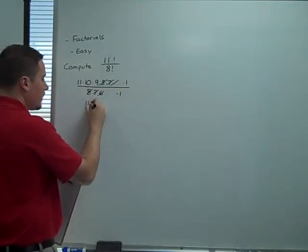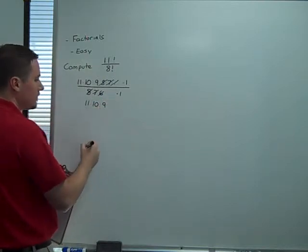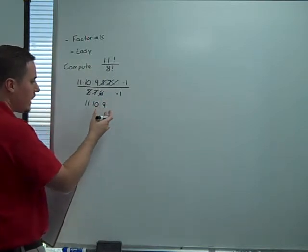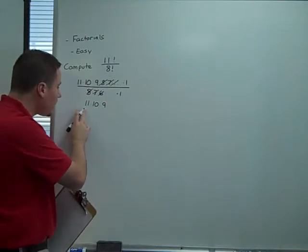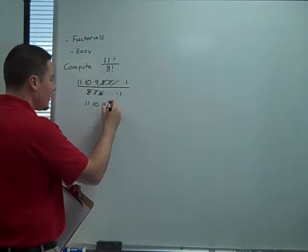Leaving us with 11, 10, and 9. So, with simple math, 9 times 11 is 99. 99 times 10 is 990.